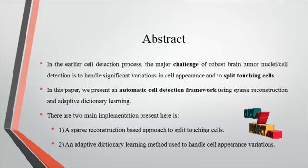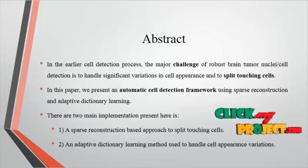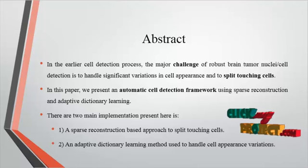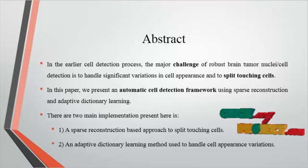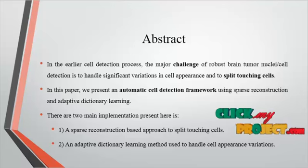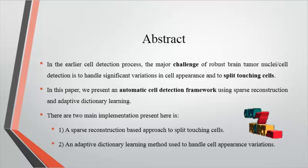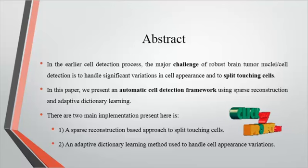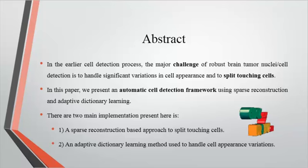In this paper, we present an automatic cell detection framework using sparse reconstruction and adaptive dictionary learning. These are the two main contributions: sparse representation based on adaptive dictionary learning is used to handle cell appearance variations. The automatic cell detection results are compared with manual ground truth and other state-of-the-art cell detection algorithms. This method achieves precision of more than 98%.